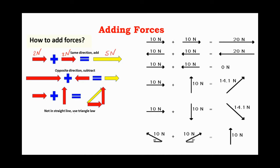What if the two forces are opposite in direction? For example, I have 10 Newton and opposite to it is 2 Newton. In this case, we subtract the two forces, and the direction of the net force will be in the direction of the bigger one. So 10 Newton to the right and 2 Newton to the left gives 10 minus 2 equals 8 Newton.